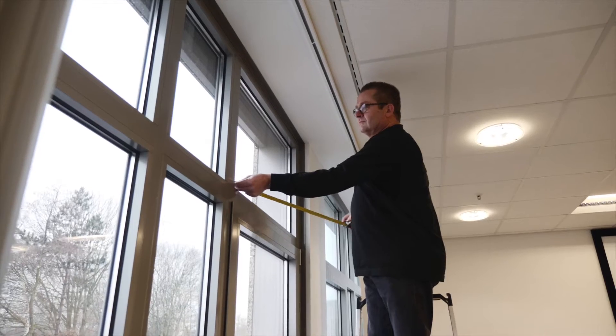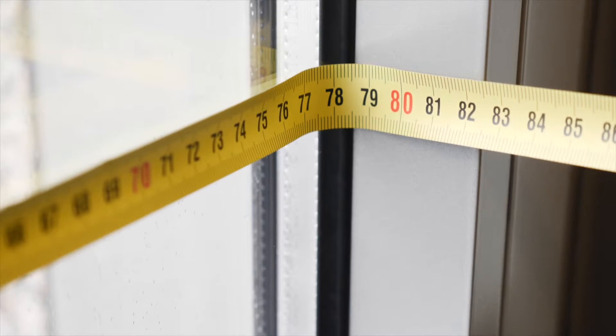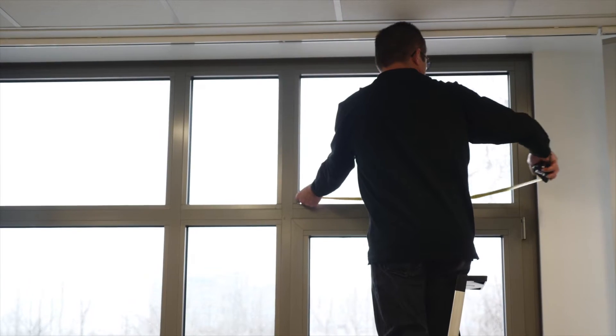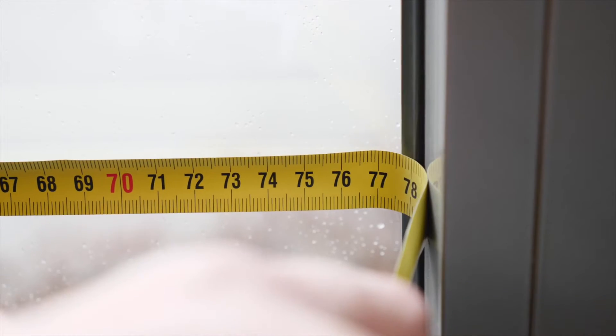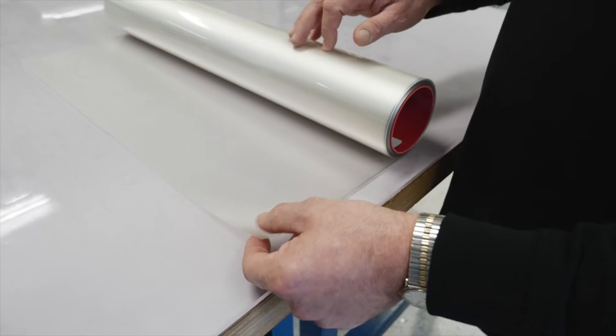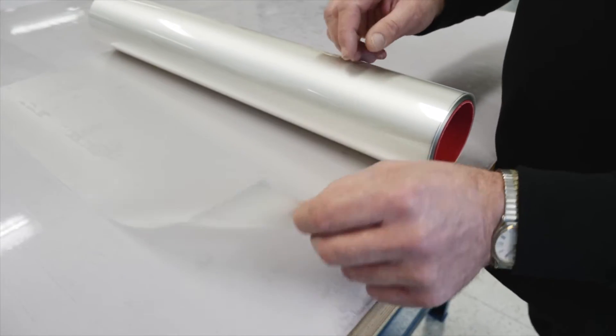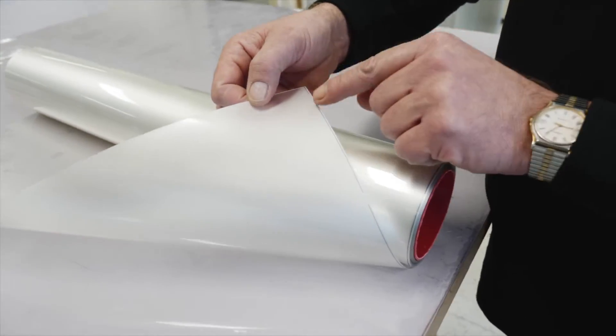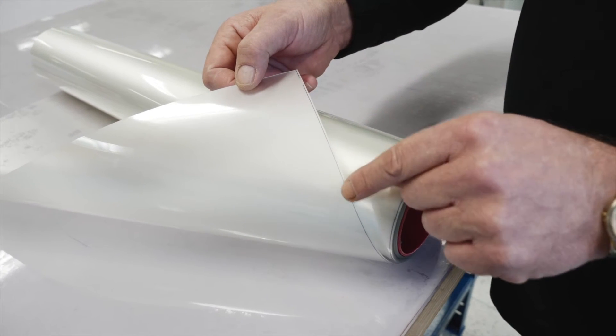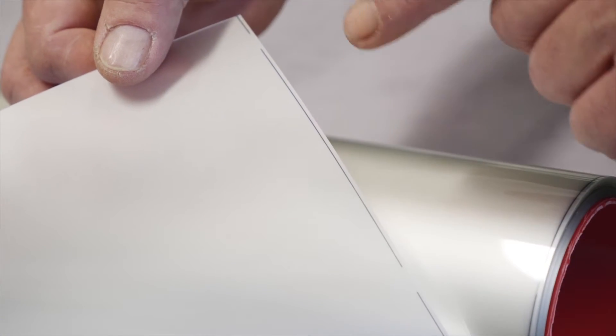The first step is to accurately measure the window dimensions, rubber gasket to rubber gasket. Remove the window film from the packaging and unroll it, making particular note of the position of the black line at the top of the film liner, so as to ensure the film is ultimately installed in the right orientation.